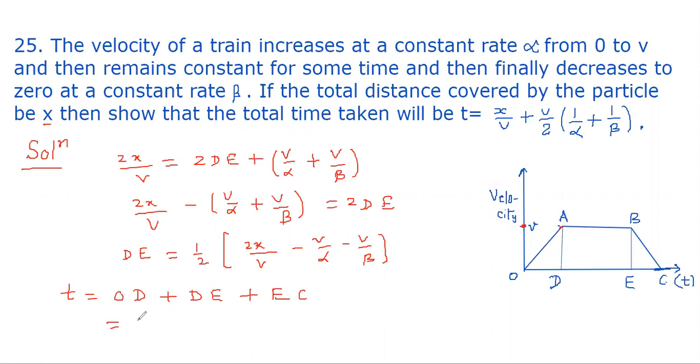Plus DE is (1/2)(2x/v - v/alpha - v/beta), plus EC we have found earlier as v/beta. Now we further simplify, so it becomes T = x/v + (v/2)(1/alpha + 1/beta).